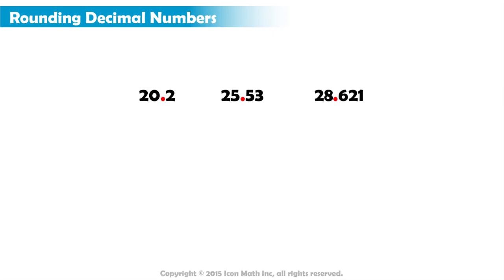You may have seen how decimal numbers can be rounded to the nearest whole number, but they could also be rounded to the nearest decimal place, such as the tenths, the hundredths, or the thousandths.